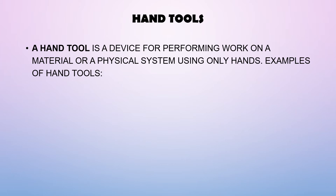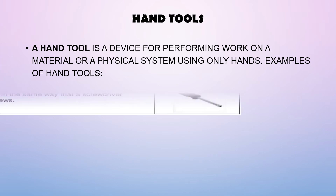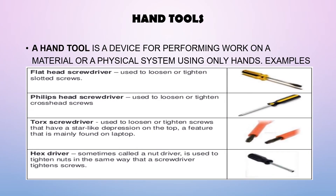A hand tool is a device for performing work on a material or physical system using only hands. Hand tools can be manually used employing force, or electrically powered using electrical current. The first example is the flat head screwdriver, used to loosen or tighten slotted screws. It is a screwdriver with a wedge-shaped flat tip used to tighten or loosen screws that have a straight linear notch in their heads — arguably the most common tool on the planet.